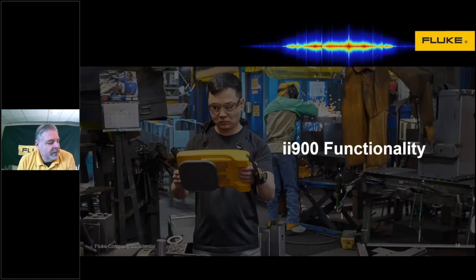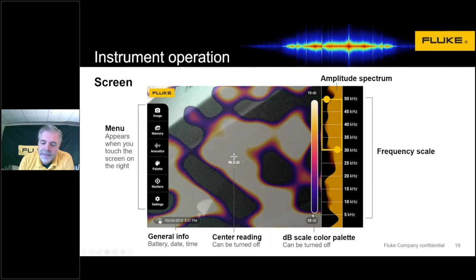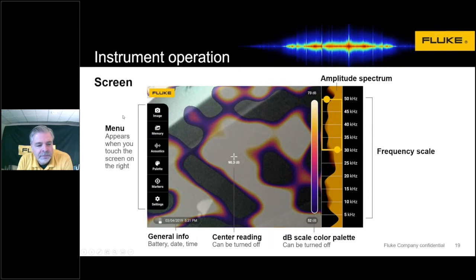Let's slow down and talk about the II900's actual functionality. This is a sample screen of what an II900 looks like. On the right-hand side, there's a frequency scale showing from around 5 kilohertz to 50,000 hertz. The yellow section on that sidebar is a graphical representation of the noise it's hearing. To the left of that there's a dB scale, a color palette that can be turned on and off, a center point reading, and general info such as battery, date, and time. When you touch the display anywhere, a side menu pops out with different menu functions.